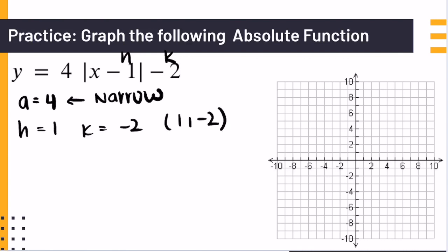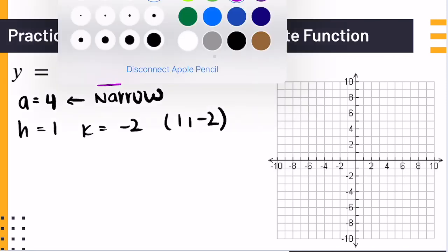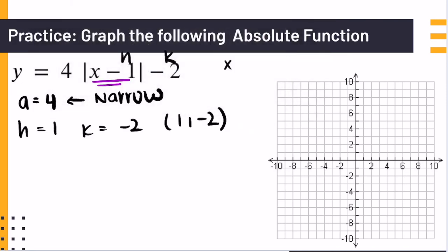Now what if you forgot? All you need to do is get the value in the absolute value and set it equal to 0. So if you set x minus 1 equal to 0, we get x equals 1. This is our axis of symmetry, and you plug it in and you'll get y is equal to negative 2, which is k.